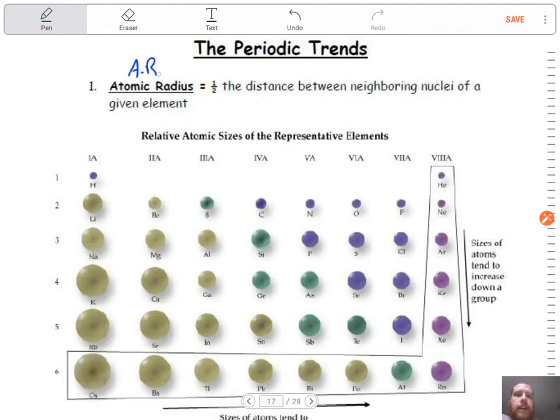Basically, atomic radius—you'll see me abbreviate it as AR, and a lot of these I'll have abbreviations for—means half the distance between neighboring nuclei of a given element. So basically guys, it's from the nucleus to the outermost electron. That's what we're looking at for atomic radius.